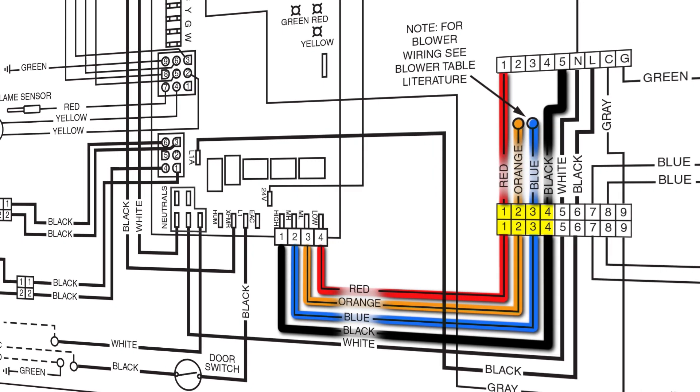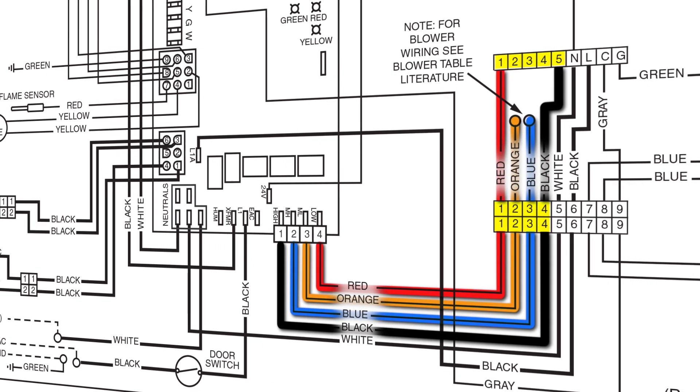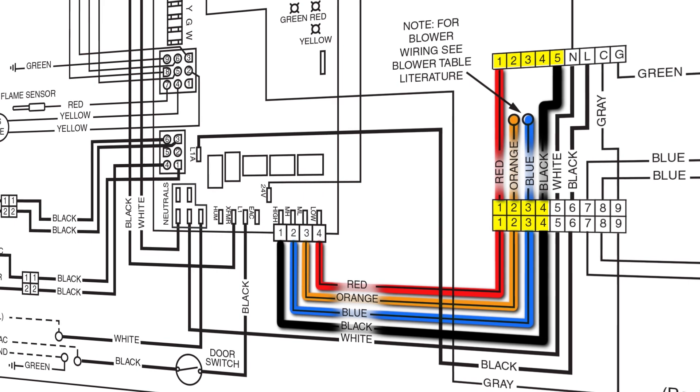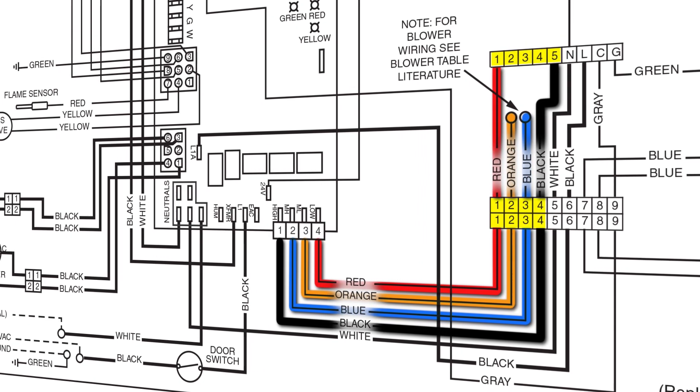So depending on what speed you want to select, you can switch up one of those color wires and put it on one of the speeds that's not selected on that nine pin plug, and that will give you a fifth speed option.